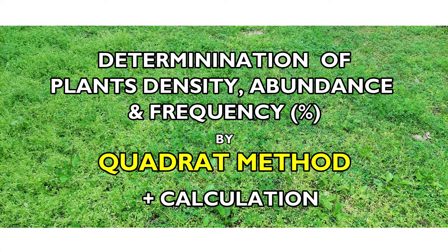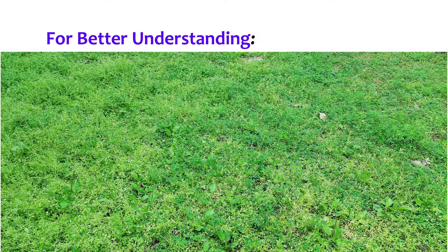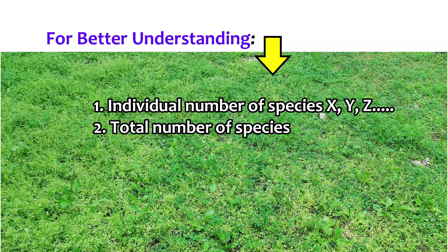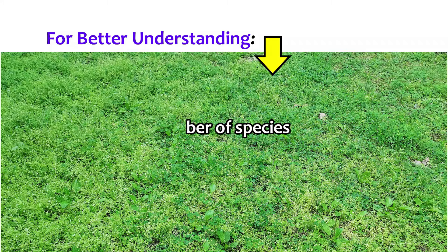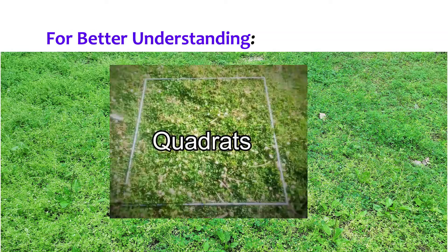To begin with, for better understanding, let us assume that we are interested in knowing how many individuals of a species and the overall number of species are present in this given plot or habitat of interest. Practically, it is impossible to count the plant individuals and species one by one. Therefore, to sample the plant population, representative information is collected by adopting the Quadrat method of sampling using quadrats.